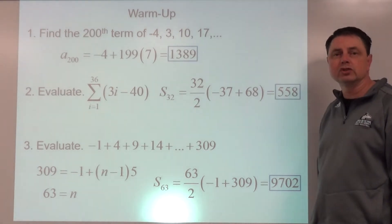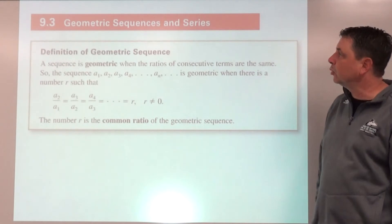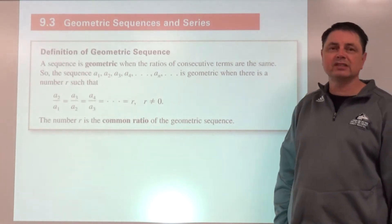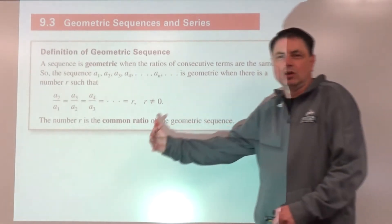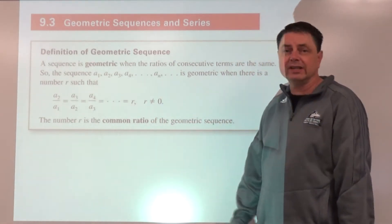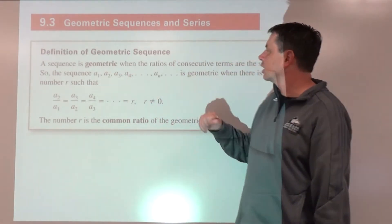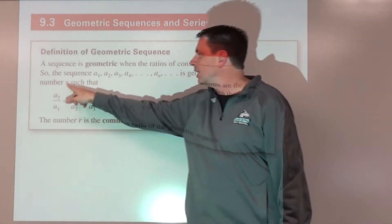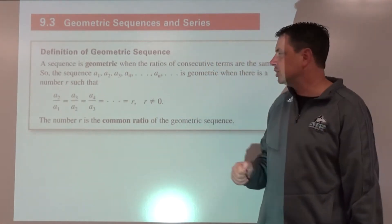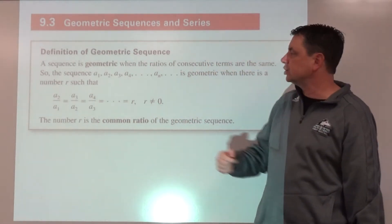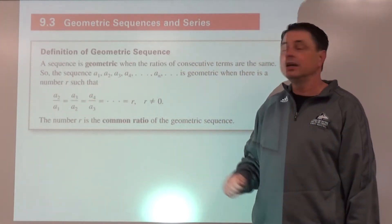This is lesson 9.3: Geometric Sequences and Series. Geometric sequences are similar to arithmetic, but what happens from term to term is we multiply by a constant r, referred to as the common ratio. To find the common ratio, take any term and divide by the one that precedes it.